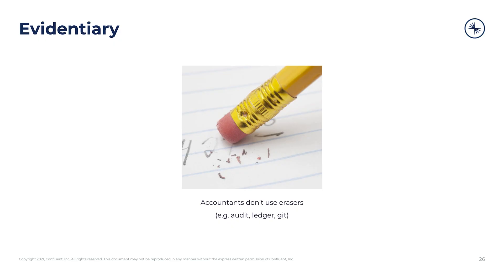The first is that events are evidentiary. So what does that mean exactly? One reason is that events are immutable — they never change. Unlike a database table where we update different rows with new values, events simply accumulate in an event log, so we can feel safe in the knowledge that they can never ever change.